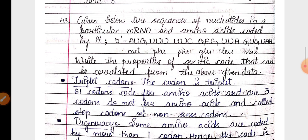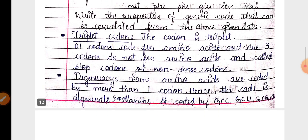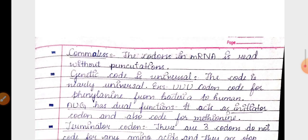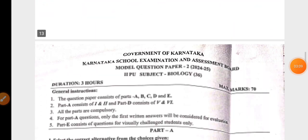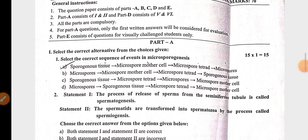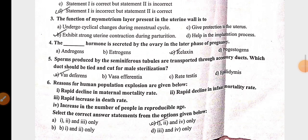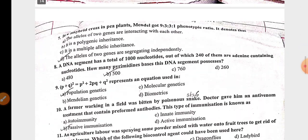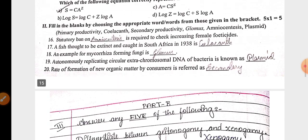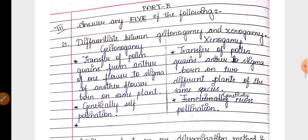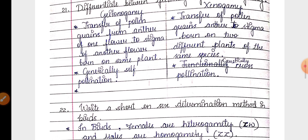Then 43 question is from molecular basis of inheritance related to genetic code features. Second model paper, MCQ right options have been marked for all the 15 questions.